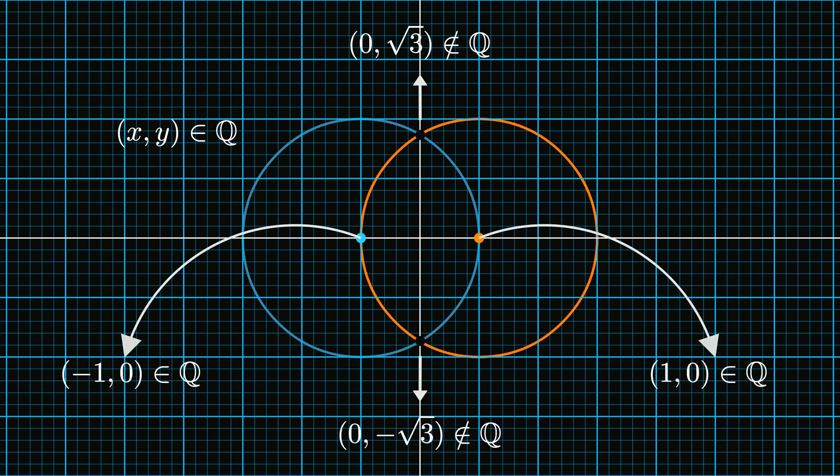However, there's a catch. The coordinates of the intersection points of the two circles in proposition one are not rational. This means those intersection points cannot belong to the circles. Thus, the circles do not intersect at all.